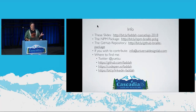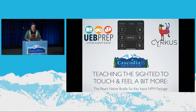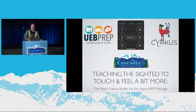I notice we're all speaking really fast because we're trying to cram everything we can into 25 minutes. My talk is called "Teaching the Sighted to Touch and Feel" — a bit more empathy. It's about the React Native Braille six key input NPM package that our team at The Circus Inc. created for a PSU department called Universal Design Lab.